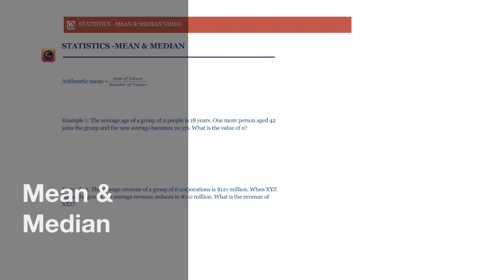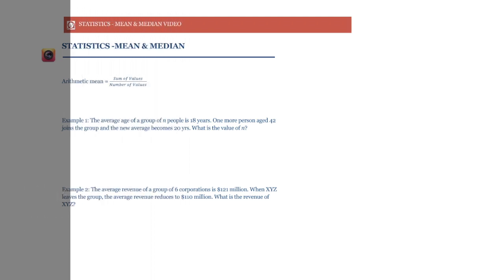The arithmetic mean of n numbers is given by the sum of the numbers divided by n. So if I have three numbers — 9, 10, and 11 — I would add them up to get 30, divide by 3, and the arithmetic mean would be 10. Essentially, arithmetic mean is that number which can replace every number in the list and the sum would not change.